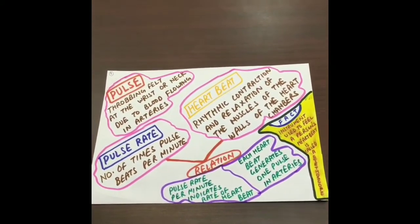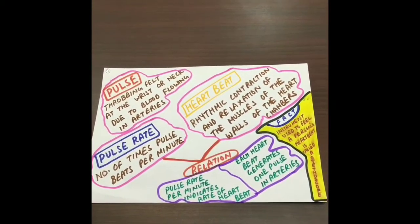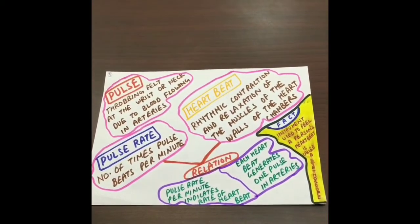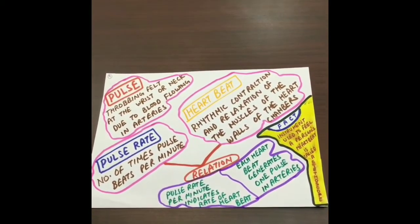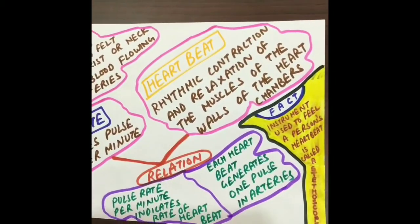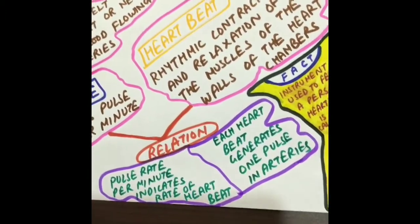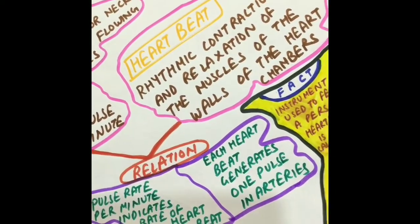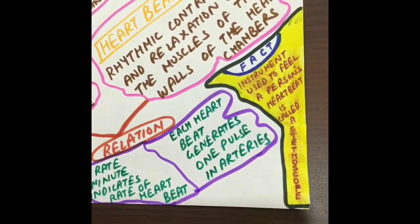Here are some new terms. Pulse: the throbbing felt in the wrist or neck due to the blood flowing in arteries is known as pulse. Pulse rate: the number of times the pulse beats per minute is called the pulse rate. On average, it beats 72 to 80 times in a minute. Heartbeat: the rhythmic contraction and relaxation of the muscles or walls of the heart chambers is known as heartbeat. The pulse rate per minute indicates the rate of heartbeat, and each heartbeat generates one pulse in the arteries. The instrument used to feel a person's heartbeat is called a stethoscope.